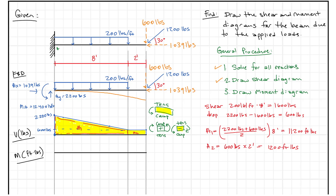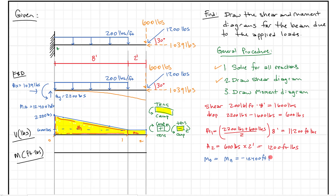Starting at point zero, the moment equals the reaction moment at A. We know the reaction moment is counterclockwise, which matches the internal sign convention for a negative moment. So the moment at zero is going to equal minus 12,400 foot-pounds. Knowing that shapes the whole rest of the problem. We come down to minus 12,400 on the moment diagram and put a line in there.